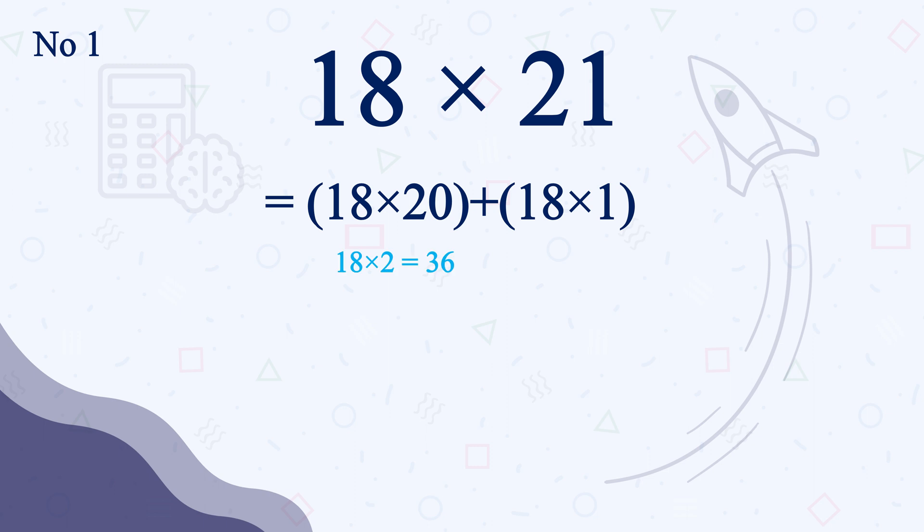Since 2 times of 18 is 36, 20 times of 18 is 360. Just putting a 0 after 36. Then adding 18 times 1 or 18 with 360 will be our final answer which is 378. So 18 times 21 is 378.